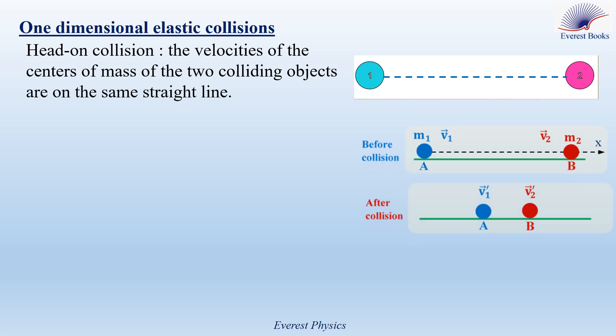Now, consider two objects A and B of respective masses M1 and M2 making a head-on elastic collision. Let V1 be the velocity of object A just before the collision, and V2 be the velocity of object B just before the collision.